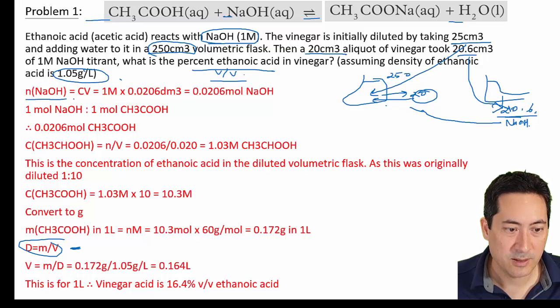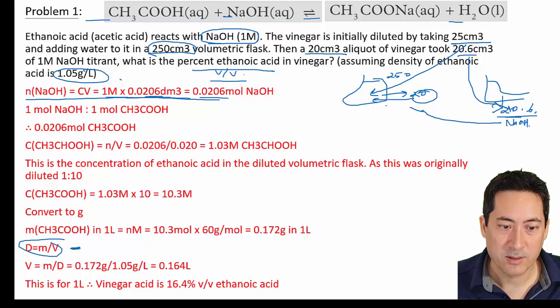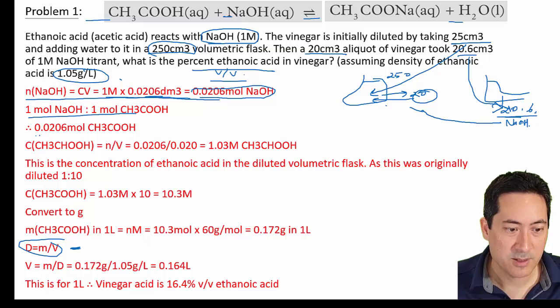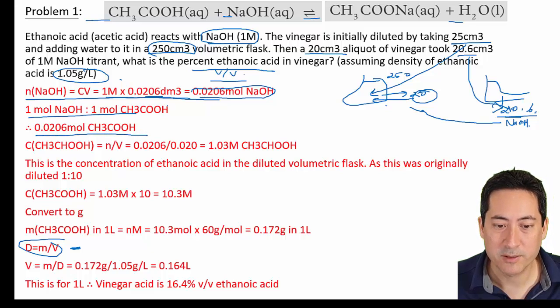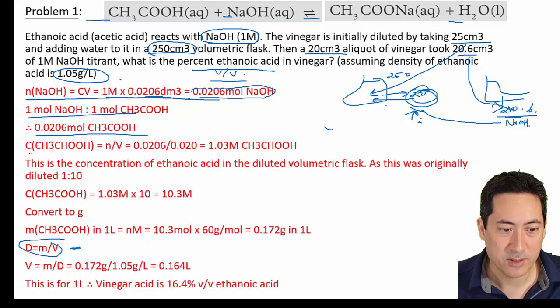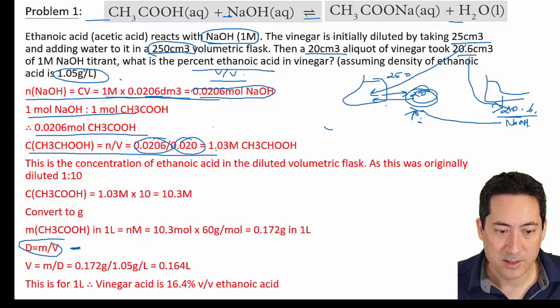You can see that here we've used 20.6 mls here of 1 mole of sodium hydroxide. That gives us 0.0206 moles of sodium hydroxide. The ratio is one is to one so that makes that easy. It's the same number of moles of vinegar. We have this equation here. We have this many moles in this many mils. The concentration of that aliquot, that portion that we took out is 1.03 molar of acetic acid.